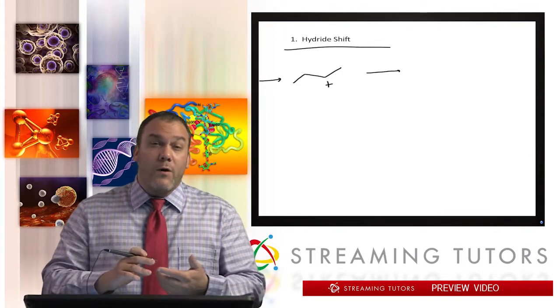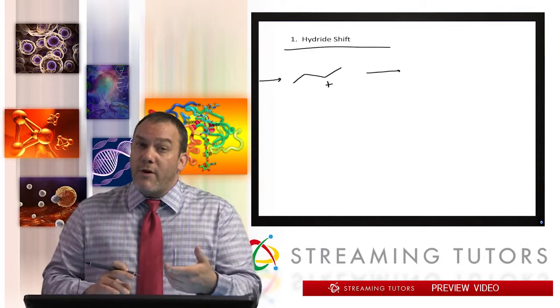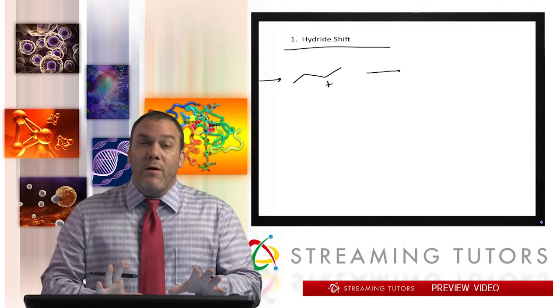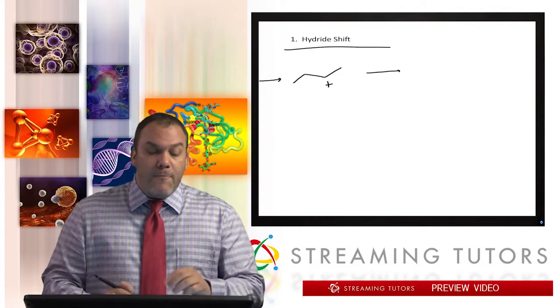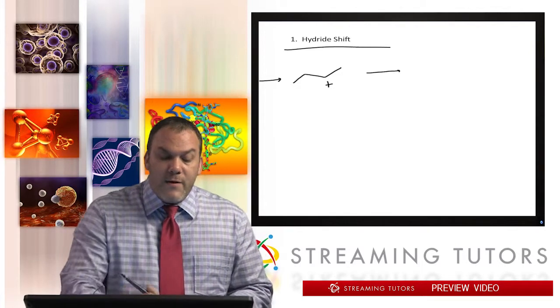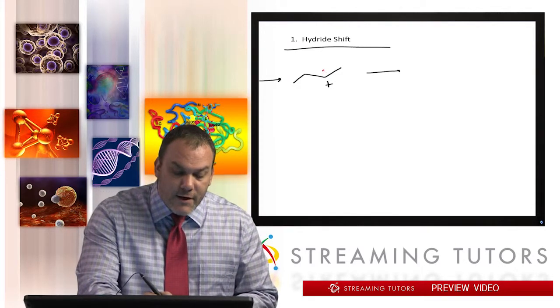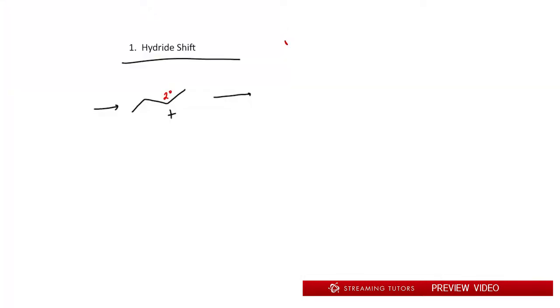I'm gonna draw an arrow that says we got to this carbocation. The key is we're here. In our case it could be a Br leaving or an OH that gets protonated and then leaves, it doesn't matter. But here we are, we're at a carbocation.